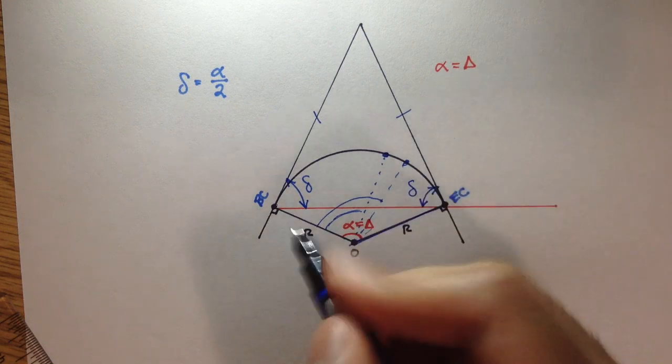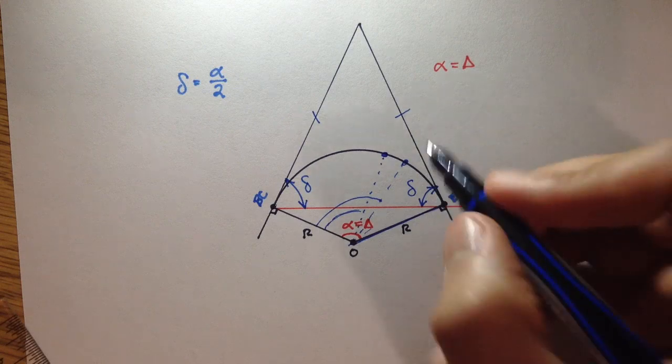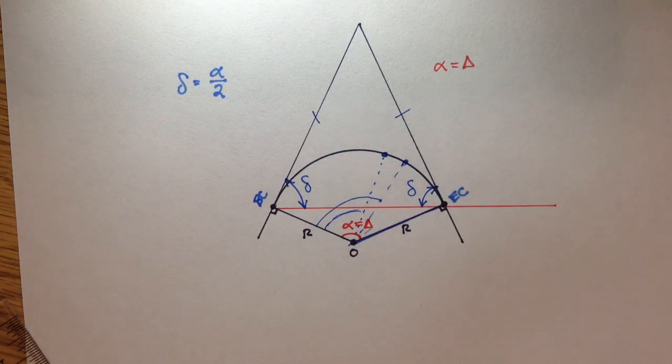So really, you have a deflection angle here, delta, and since this is an isosceles triangle, this angle here is delta.